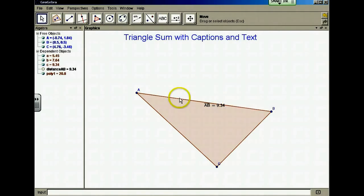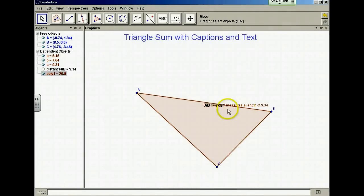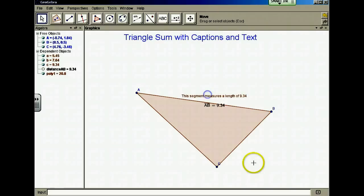I think I'd like to select this segment and I'll double click it and go to object properties and I'm going to add the caption. This segment measures a length of, and I want the length to show up. To do that within a caption, if we use percent sign V to give the value, then the length of this segment will show up. I have to remember to turn on a caption when I make a caption and here's my caption. This segment measures a length of 9.34.